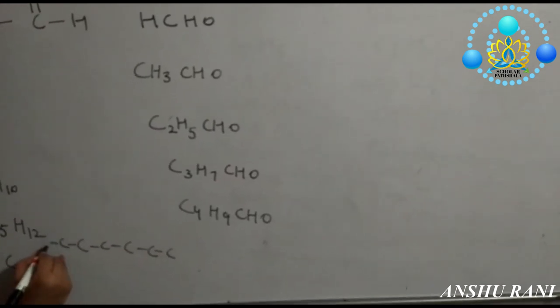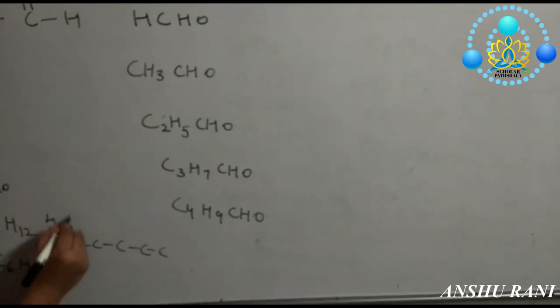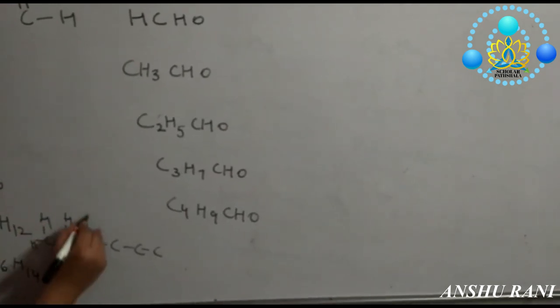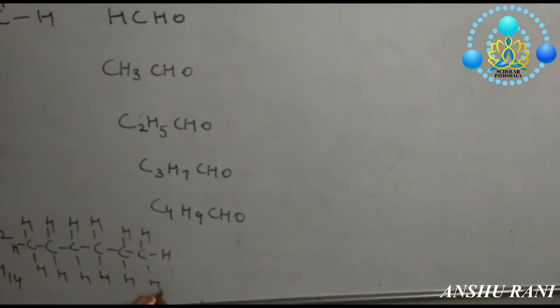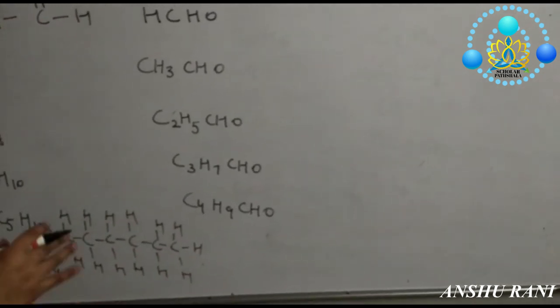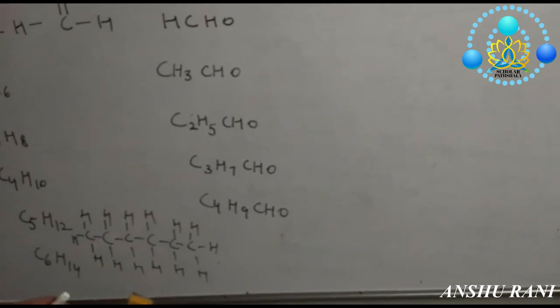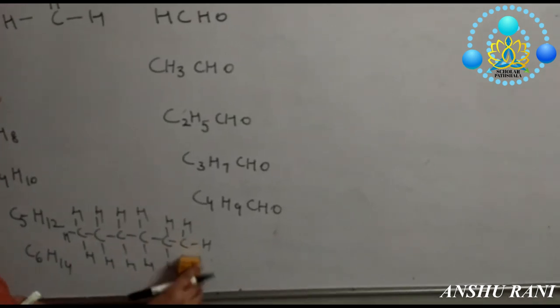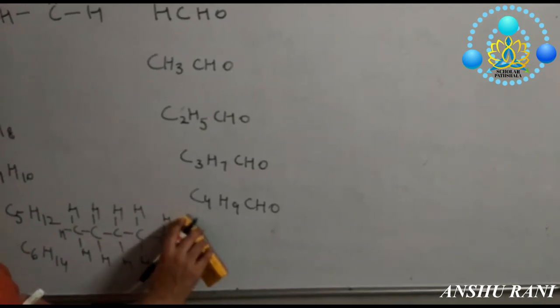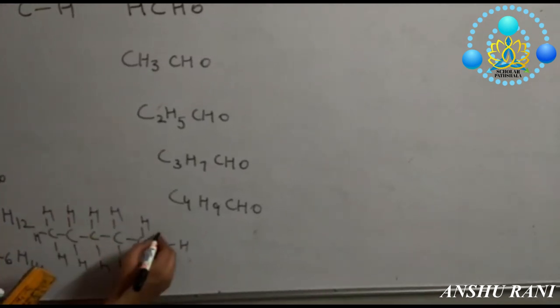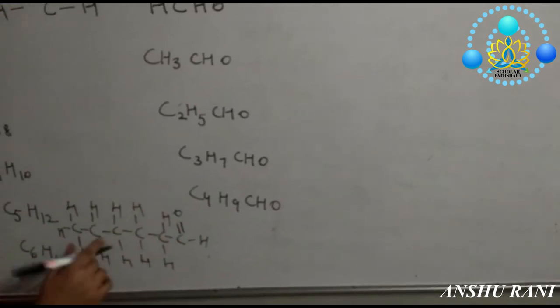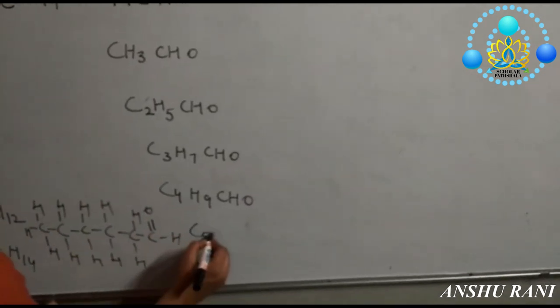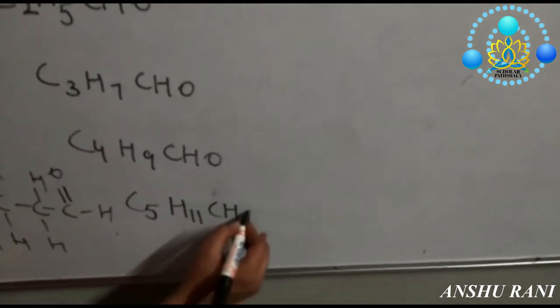You have taken six carbon atoms. What we were doing? We were replacing one of the hydrogen atoms by oxygen. Hydrogen is having valency of one, but oxygen is having valency of two. So this chain is C5H11CHO.